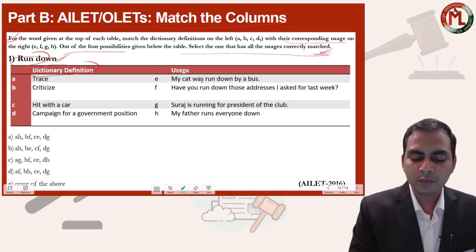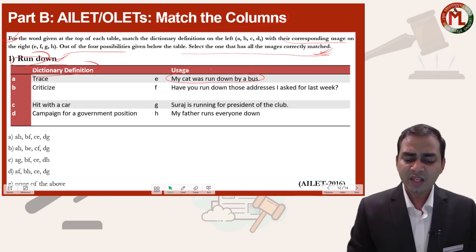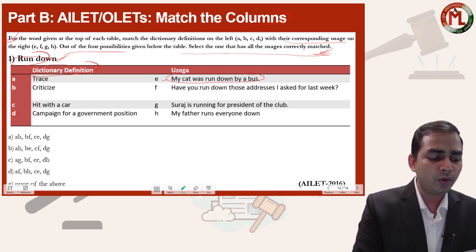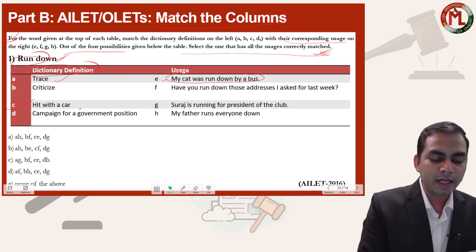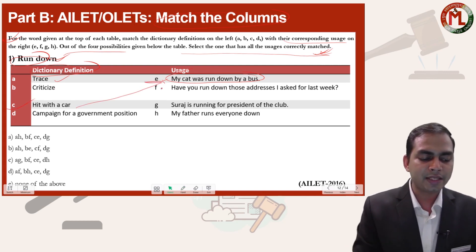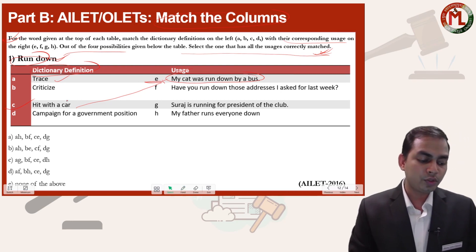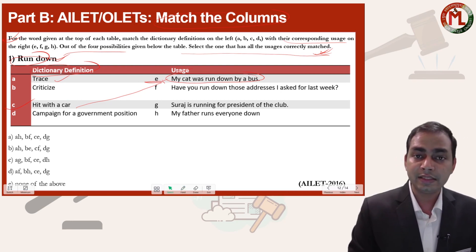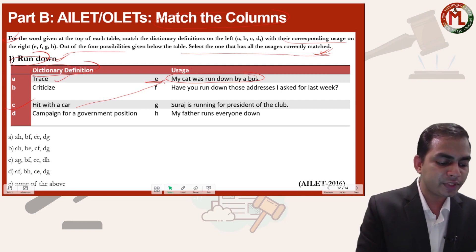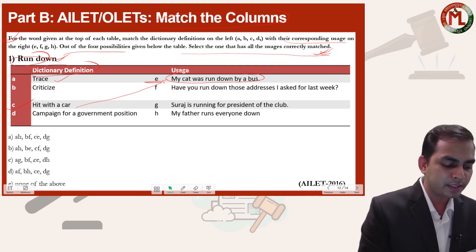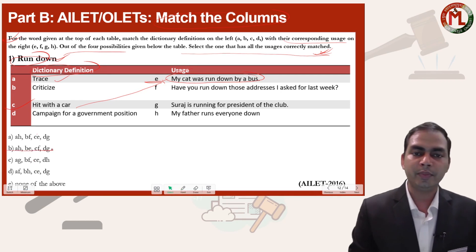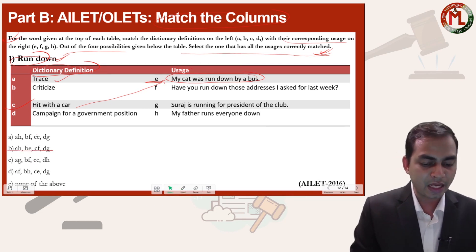The first usage is: 'My cat was run down by a bus.' From this sentence you can figure out that 'trace' is not correct, 'criticize' is not correct, but 'hit with a car' is the correct match — so C goes with E. Now find which options contain C with E. That gives us options A, C, and D. So you can eliminate option B immediately.